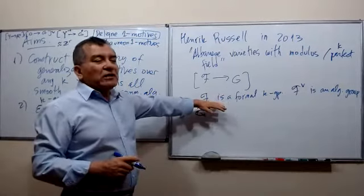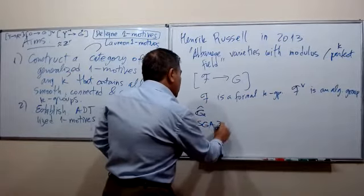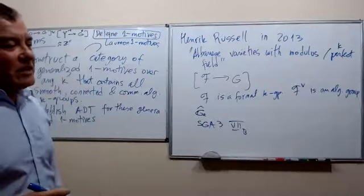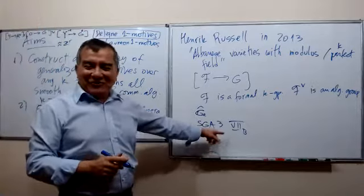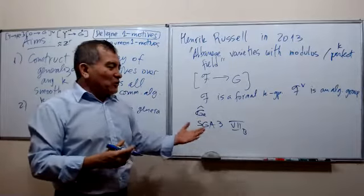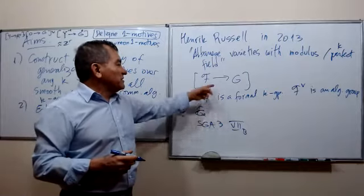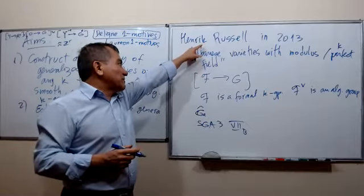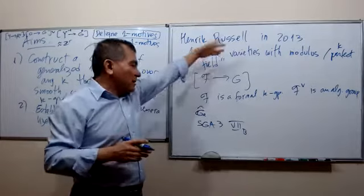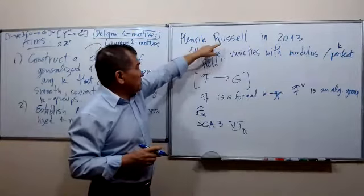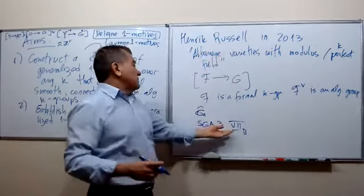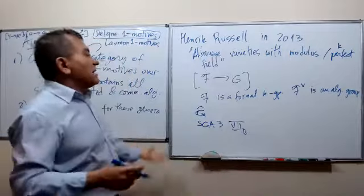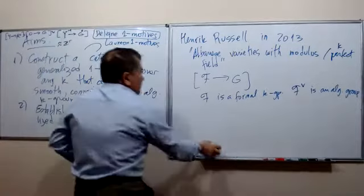To master this I have to really understand SGA 3 and SGA 7B — Grothendieck's paper on formal groups — which is written very abstractly and generally. I've tried to understand it many times, but without examples it's hard. One of my projects is to really understand Russell's paper and read both at the same time, trying to get some examples.